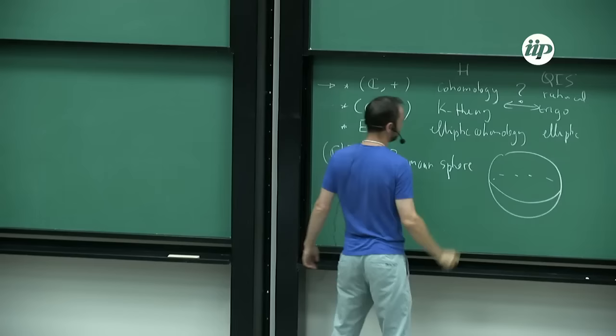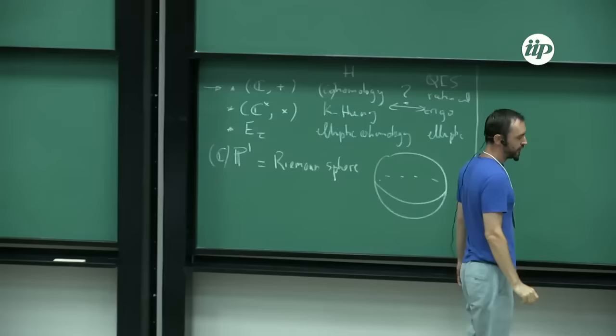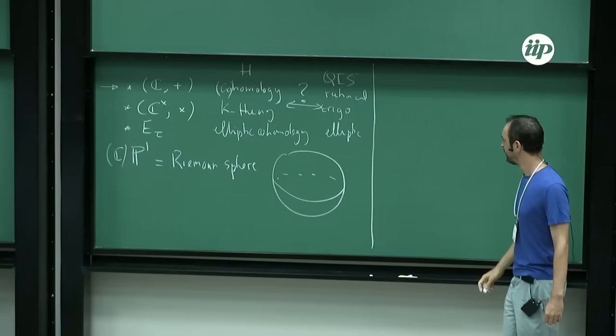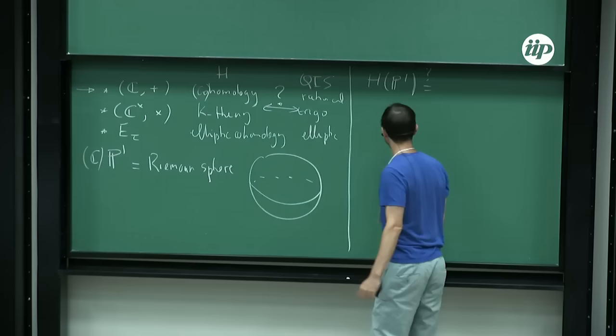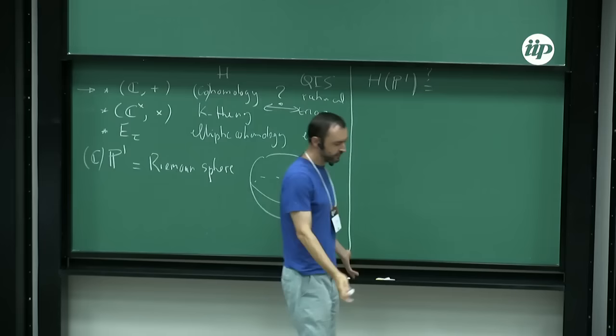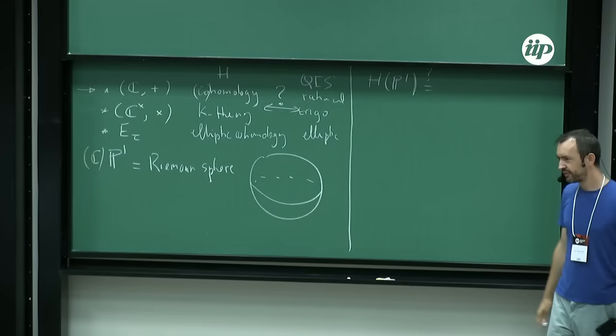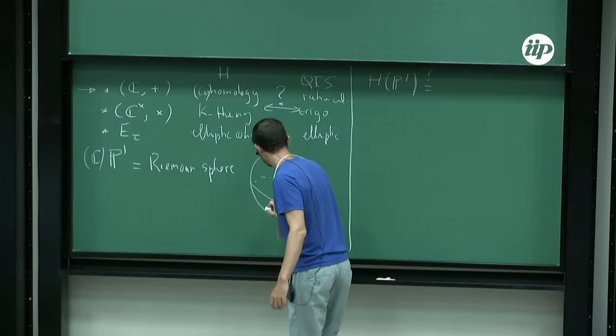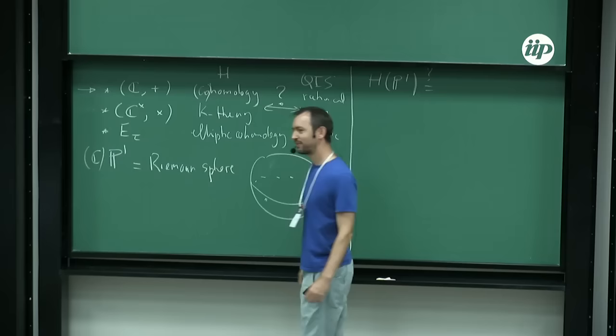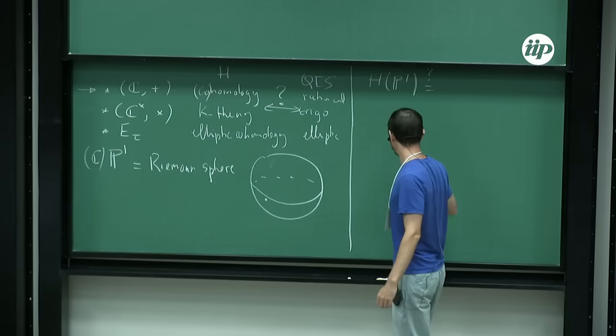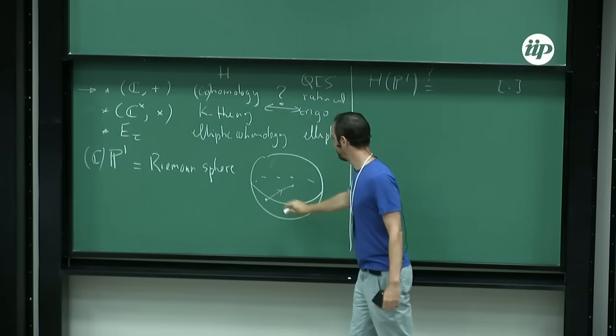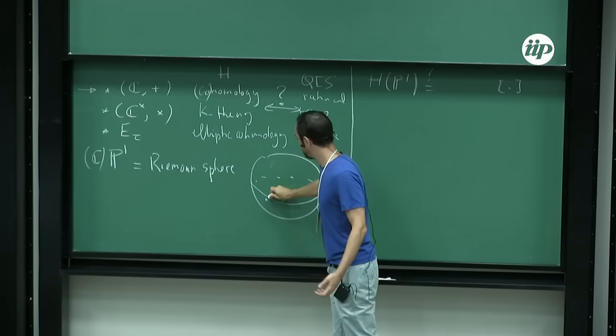The next thing is to associate to this space some algebraic data. I'm only going to work with ordinary homology — so just ordinary homology of P1. I'll use the homological language, which is the most intuitive way to define things. What does it mean to take the homology of the Riemann sphere? This is topological; at this stage we don't need the complex structure. It's just literally the sphere, and homology is about cycles — non-trivial cycles. For example, you can take a point, and by definition this is a non-trivial cycle.